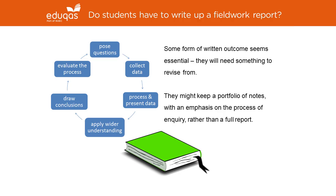Some teachers have indicated that they will get students to write up a full report after each inquiry. However, you may decide that this is not necessary. The assessment is through an examination rather than moderation of a report. However, students will need something to revise from. Perhaps they should keep a portfolio of notes instead, with notes on each of the six stages of the inquiry process. For example, in the first cycle, focusing on the strengths and limitations of using transects, and drawing conclusions about spheres of influence and whether their inquiry matched the typical patterns they might have expected based on their wider understanding of this concept.